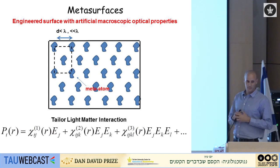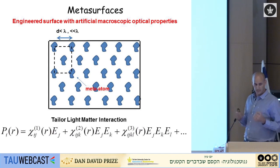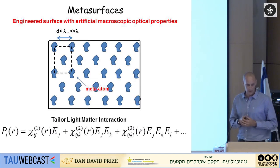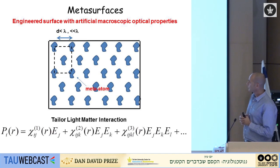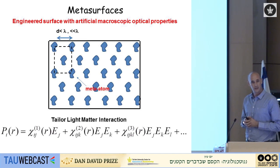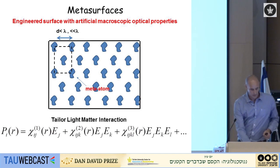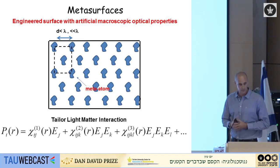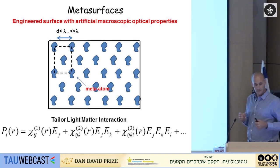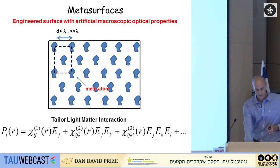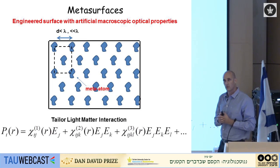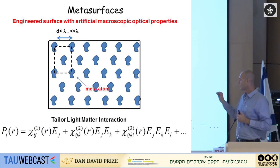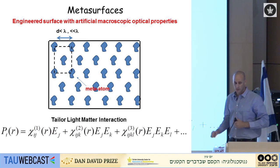How do we construct them? We start usually with one meta-atom that we know how it interacts with light, put it in a lattice that has an important role in the behavior. Usually it is a dense lattice, much more dense than the wavelength, and by that we create our surface or material which has artificial macroscopic optical properties, allowing us to tailor the interaction between light and matter.